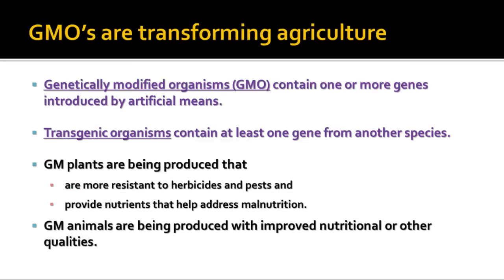Another thing that genetically modified organisms — called GMOs — are doing is being used a lot in agriculture. GMOs have one or more genes introduced by artificial means, and we call those changed species transgenic organisms. Various plants are being produced genetically that are more resistant to herbicides. There's a whole line called Roundup Ready plants, meaning you can treat your crop field with Roundup herbicide and it won't kill the crops — only the weeds.